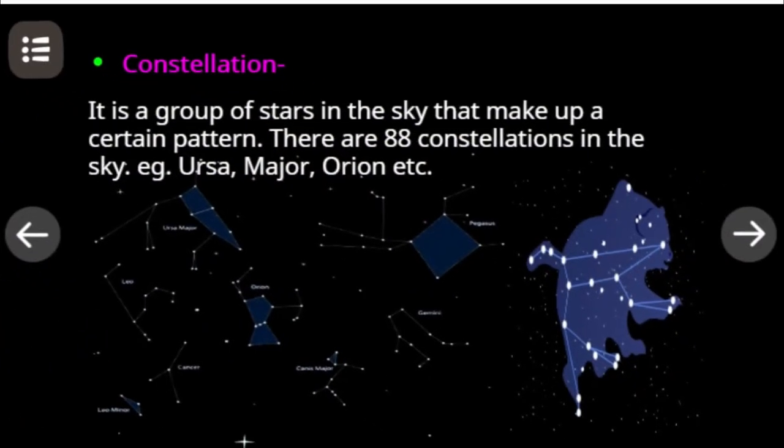During the night, we see different patterns formed by groups of stars in the sky. These are called constellations. There are 88 constellations, for example, Ursa Major, Orion, etc.